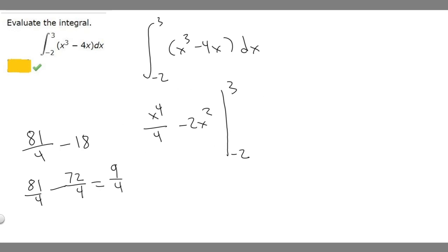So when we plug in 3, we get 9 over 4. Then we subtract, and we're going to plug in minus 2.